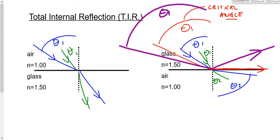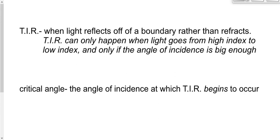Be careful: there's a flaw in the rock-skipping analogy. When you skip a rock, you're going from air to water. But total internal reflection with light can only happen when going from a high index to a low index — for example, water to air, not air to water. It also only happens if the angle of incidence is at or above the critical angle. The critical angle is the angle of incidence at which total internal reflection begins to occur.